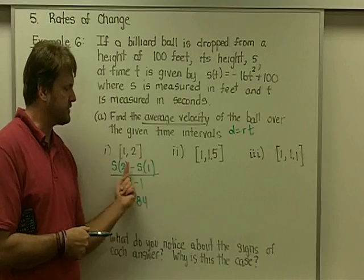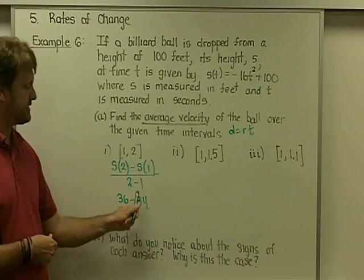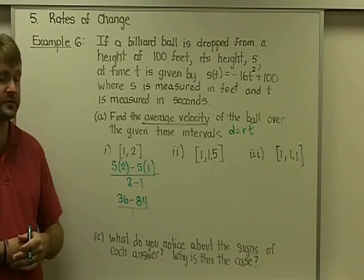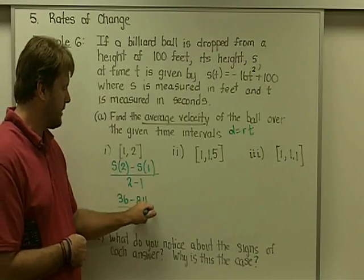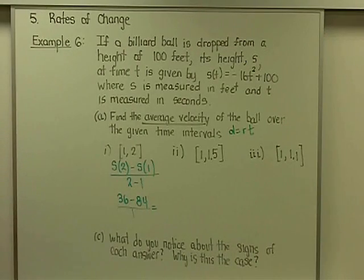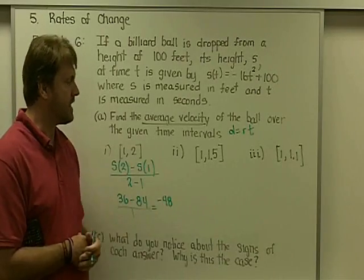So the ball is 84 feet off the ground at time one. Once again, it doesn't make any difference at all if these are backwards, as long as you're consistent with what's going down in the denominator, and I still want to go two minus one to keep with this order. Two minus one is, of course, one. And when I go ahead and simplify this, what do we get there? Is that 48, I believe, or negative 48? And that would be correct.